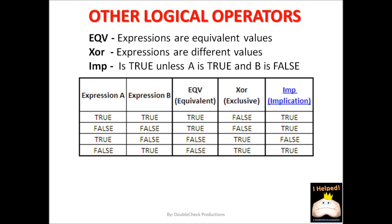Let's look at the examples. Expression A is true and expression B is also true — these are equivalent values, therefore equivalent is true. They are not exclusive values, meaning they are not differing values — both of them are equivalent, therefore the exclusive value comes out false. For the implied value, does it meet the criteria of A is true and B is false? No, that's not the case, so it stays true. In our next row, both values are false — they are equivalent, so equivalent comes out true; they are not differing values, so exclusive comes out false; and the implied value still comes out true.